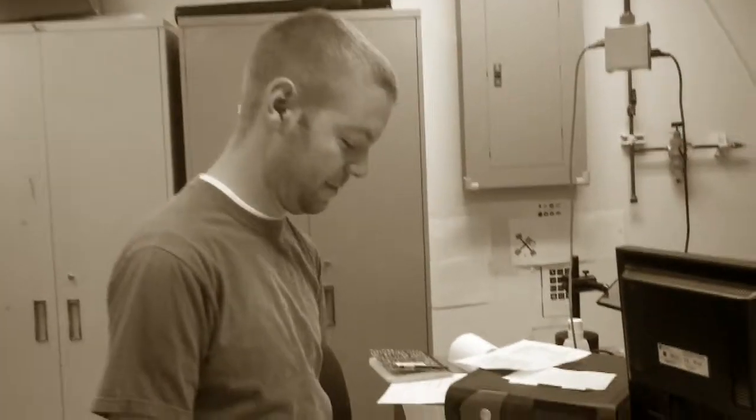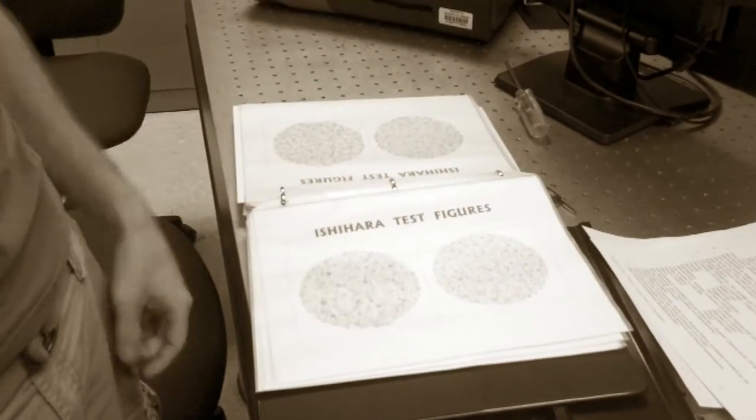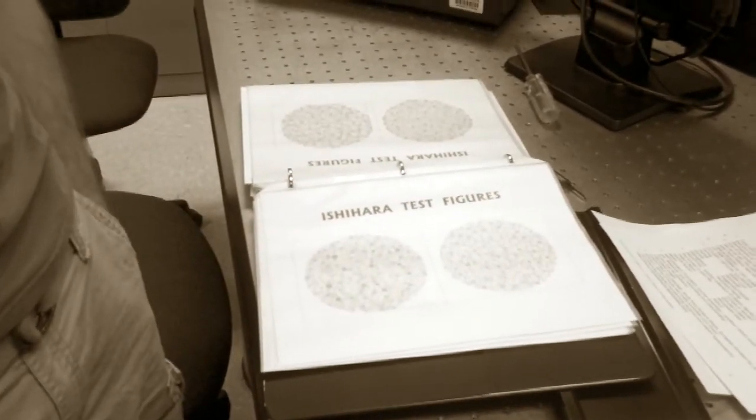So that was all just a lie. If you can see a number here, then you're not colorblind. Because the 56 here is written in brown, and the background color is green slash blue.